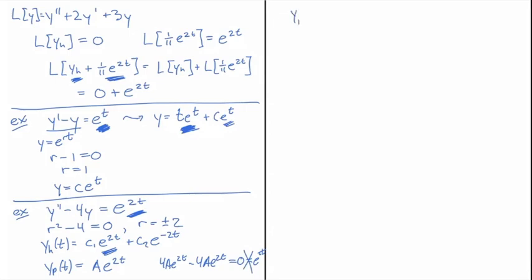There's no way of choosing a so that I can make that equal to e to the 2t. Impossible. So I'm missing something, and what I'm missing is the fact that I should have used this idea from the example here of guessing that yp of t should be t e to the 2t.